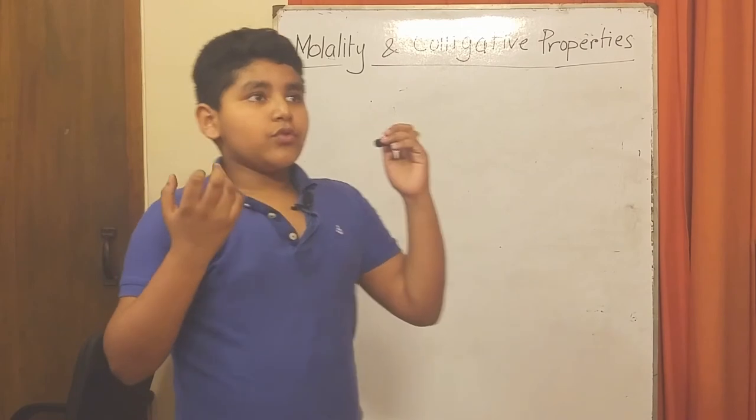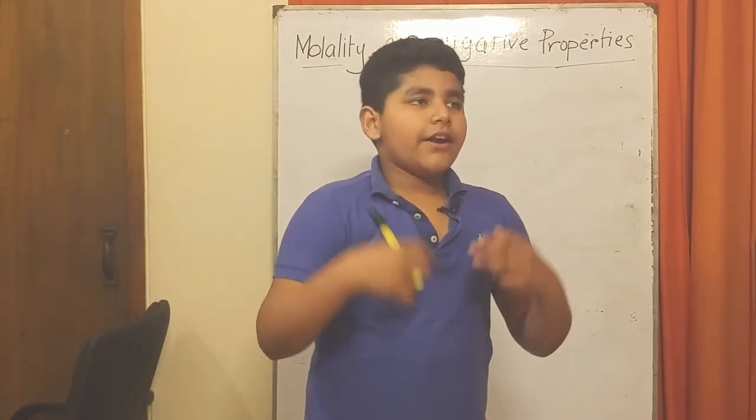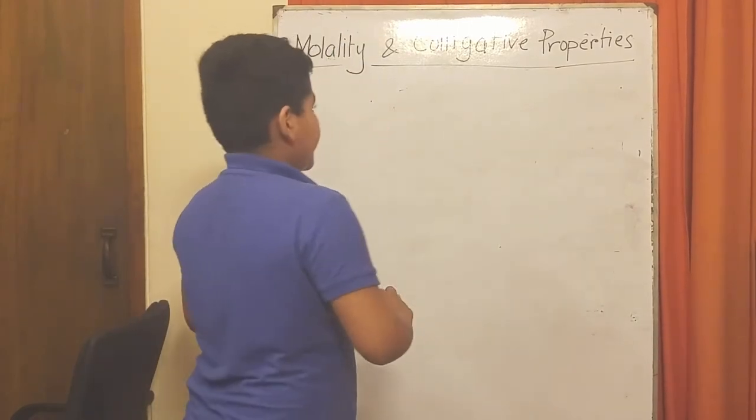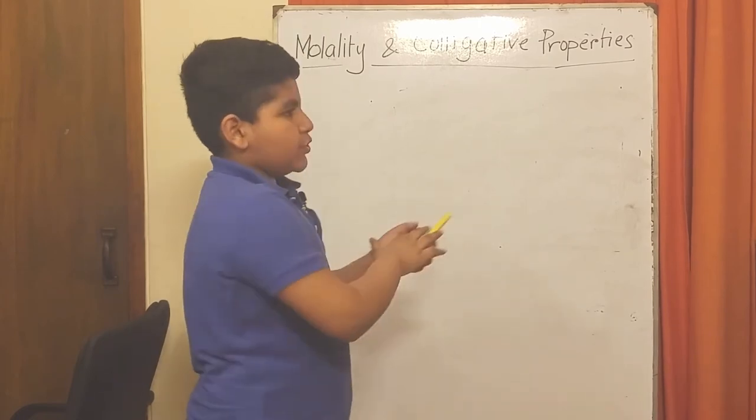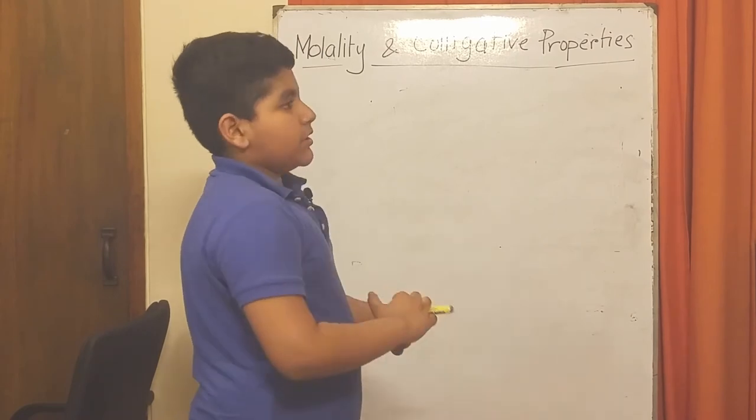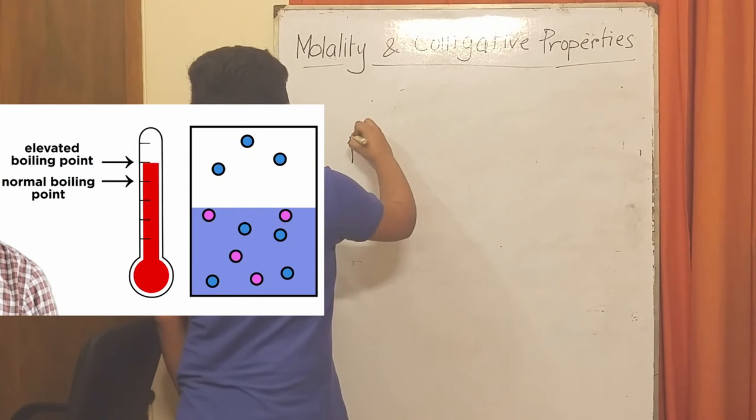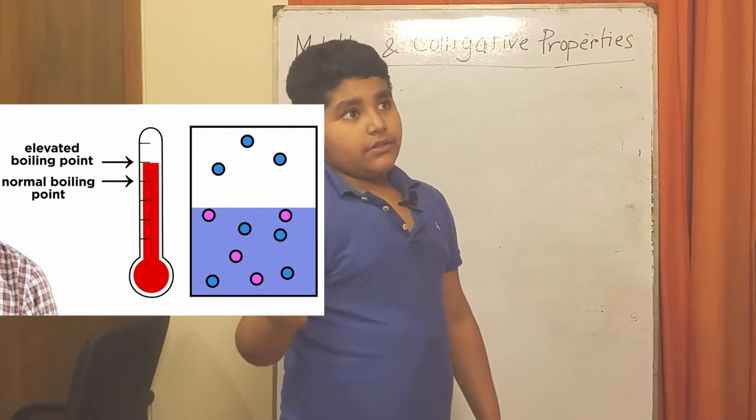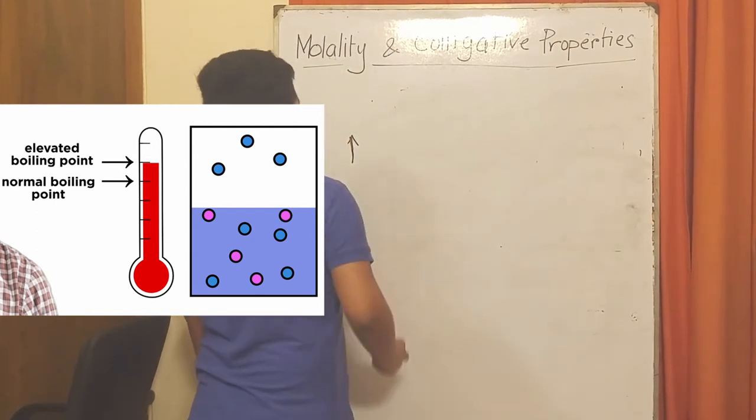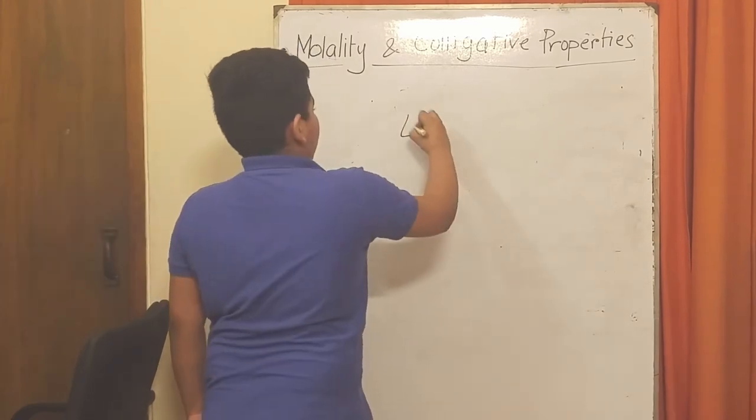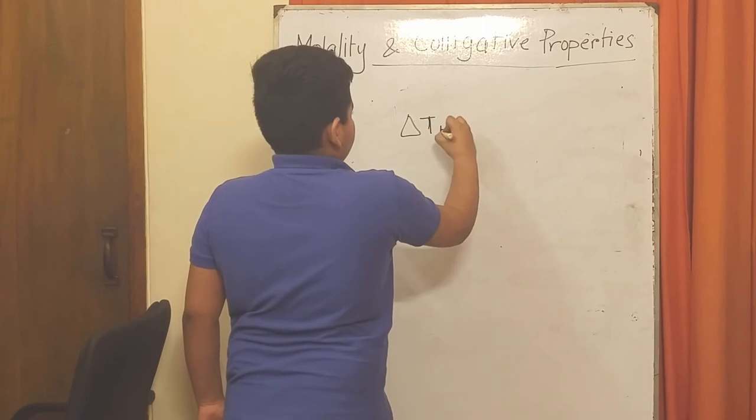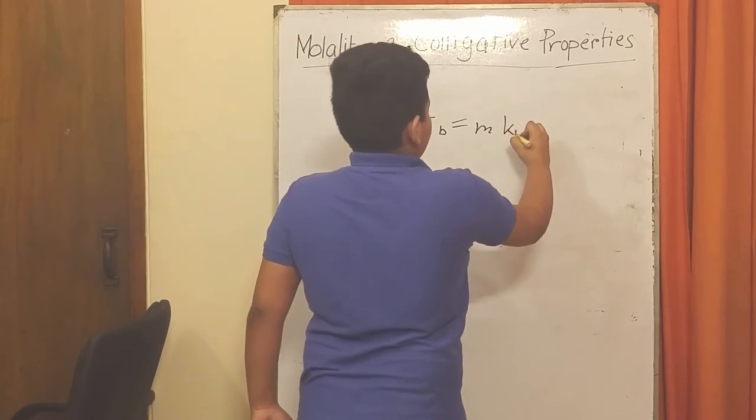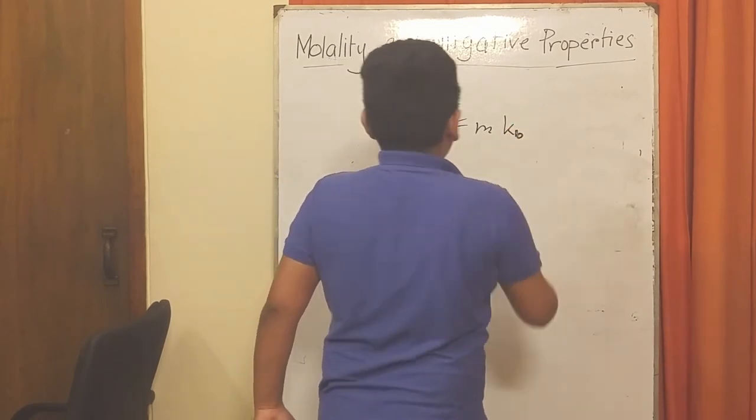If we apply our ideal gas laws, the higher the heat, the faster particles move. So if we apply that here, the solute won't be able to block many particles, so the boiling point will be elevated for the liquid or solvent to boil. This is called boiling point elevation. To know the new boiling point or the change in boiling point, it equals molality times a constant, kb.